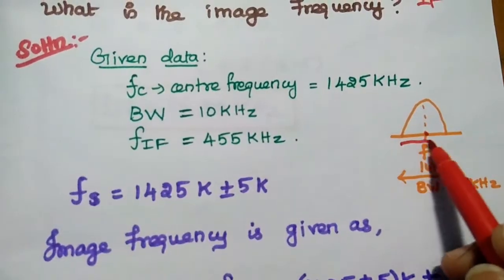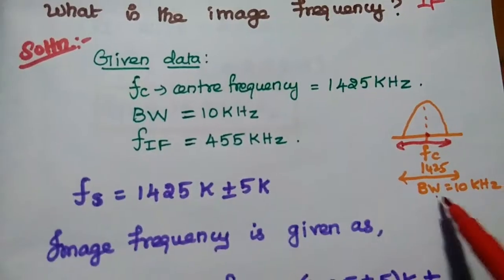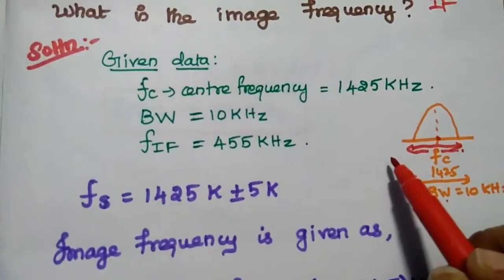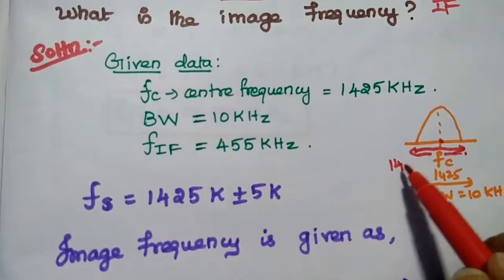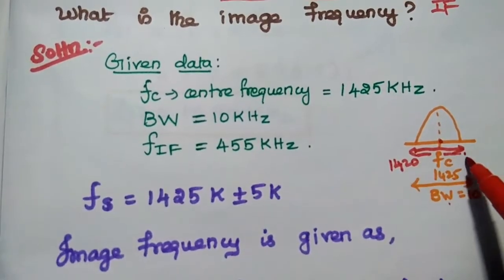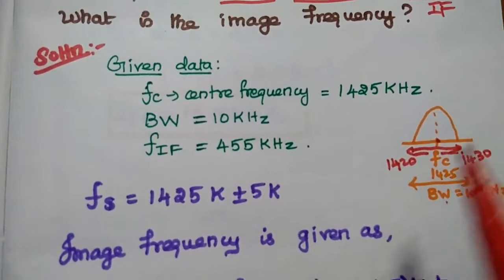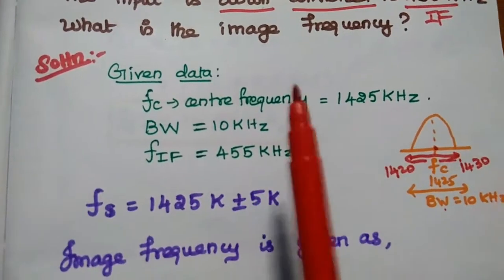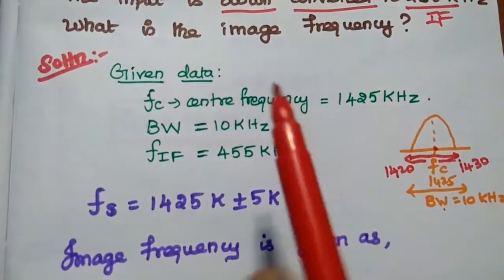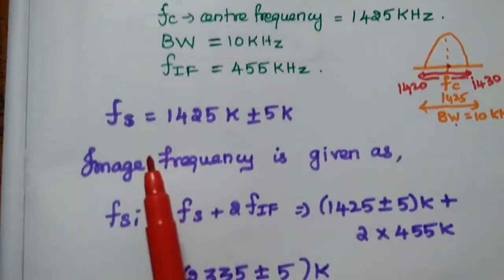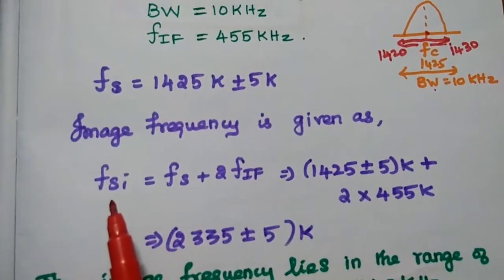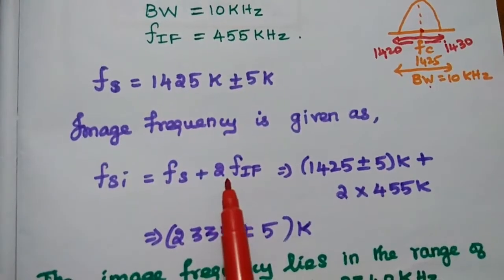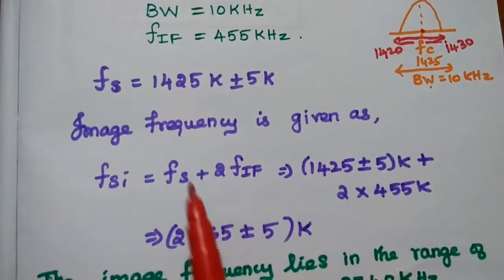The center frequency is 1425 kHz and the bandwidth is 10 kHz, so it is ±5 kHz around the center. The signal frequency range is therefore 1420 to 1430 kHz. The intermediate frequency is 455 kHz. We are going to find the image frequency using the formula FSI equals FS plus 2 times the intermediate frequency.